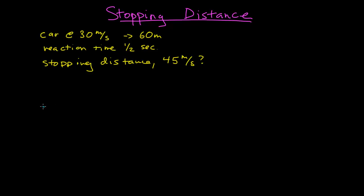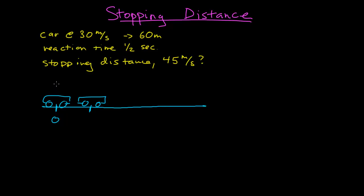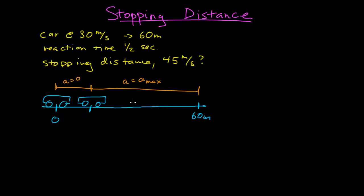My first step was to draw a picture, so let me get my picture back and understand what's going on. At some point the person wants to stop, so there's a reaction time. The person goes some distance where acceleration equals zero before they actually apply the brakes, and then 60 meters later the person stops. This is the minimum stopping distance where the car is actually slowing, but before that there's a distance the car travels during the reaction time before the brakes are applied.